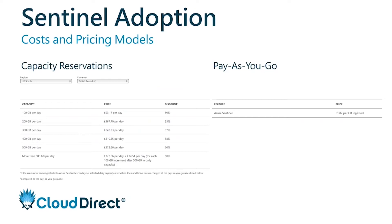Depending on how much data you use, it may be worth looking at upfront payment models, where you get around a 50% discount if you commit to that data capacity upfront. It does start from 100 gig per day, so you have to be ingesting a fair amount of data before you can unlock that. As you can see, more than 500 gig per day will give you a 60% discount. So depending on the amount of data you end up ingesting and analyzing, that's definitely something for consideration and a way that you could reduce costs.